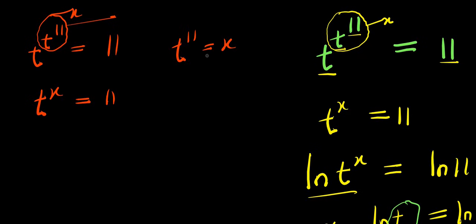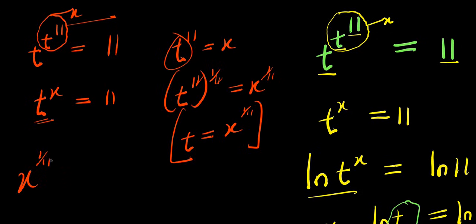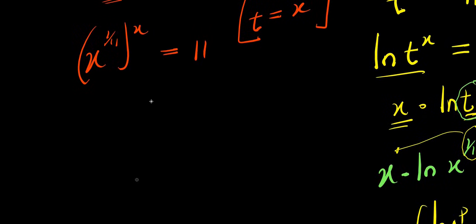Let's isolate t. Raising both sides to the power 1 over 11: t power 11 raised to 1 over 11 equals x power 1 over 11. The 11s cancel, giving t equals x power 1 over 11. Now I replace t in the equation t power x equals 11 with x power 1 over 11, giving x power 1 over 11 raised to the power x, which simplifies to x power x over 11, equals 11.